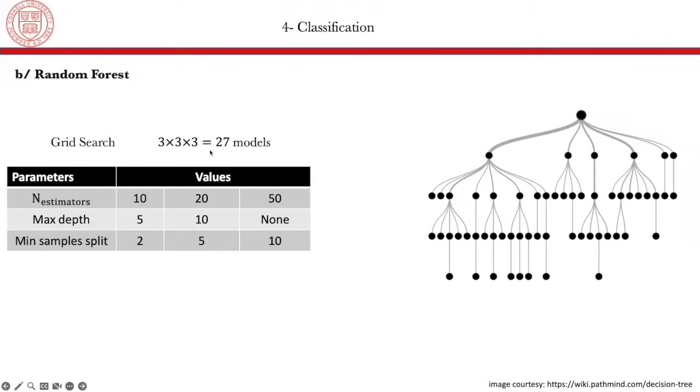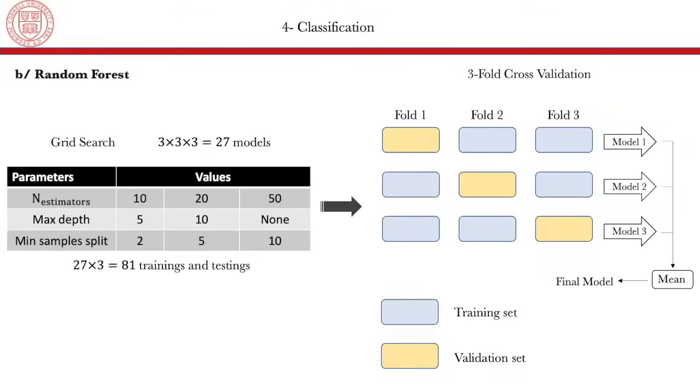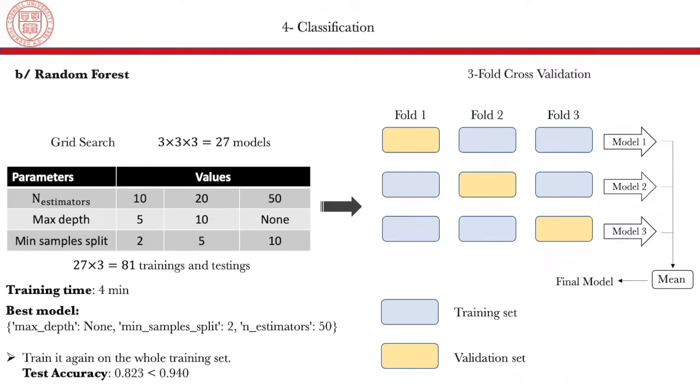So here again, we have 27 different models. We test them in a three-fold cross validation. We select the best model. And in this case, the whole operation only took four minutes, which is much faster compared to the SVM. And the best model in this case is this one. So the maximum depth is None. So we don't have any restrictions on the maximum depth. The minimum sample split is two. And the number of estimators is 50. And then we train it again on the whole training set. And the test accuracy in this case is 0.823, which is smaller than the accuracy of the SVM.